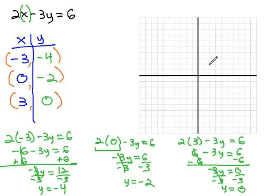The first point is negative 3, negative 4, which is left 3, down 4. The second point is 0, negative 2. That would just be down 2. And the last point is 3, 0. That would just be to the right 3.